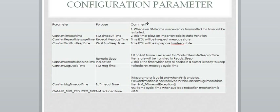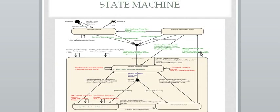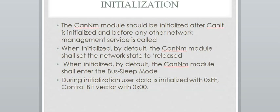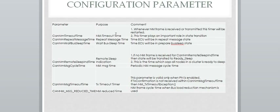These are the important timing parameters configured in CAN-NM. The first timing parameter is CAN-NM Timeout Time, also called NM Timeout Time. As we saw in the state machine, this timer, once elapsed, causes a transition from Ready Sleep to Prepare Bus Sleep. This NM Timeout Timer plays an important role in state transition activity, and it will be restarted whenever there is an NM frame reception or transmission.